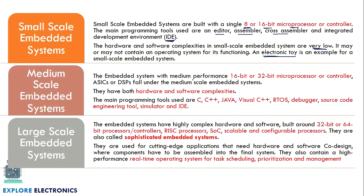Medium scale embedded systems have medium performance with 16-bit to 32-bit microcontrollers or processors, along with ASICs — application-specific integrated circuits — or digital signal processors. Both hardware and software complexities are increased. The main programming tools used are C, C++, Java, Visual C++, and RTOS — real-time operating system — along with debugger, source code engineering tools, simulator, or IDE.